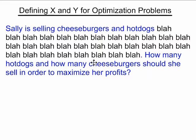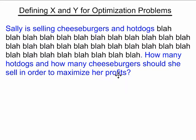This example has Sally selling cheeseburgers and hot dogs. Most of the paragraph has 'blah blah blah' entered into it to focus your attention on the question at the end: how many hot dogs and how many cheeseburgers should she sell in order to maximize her profits?